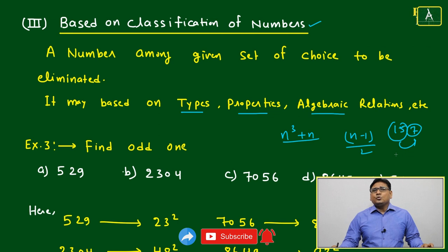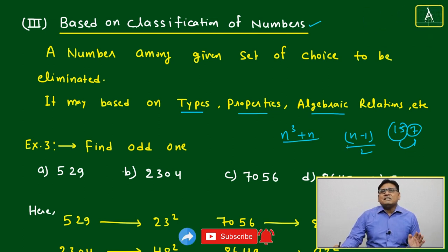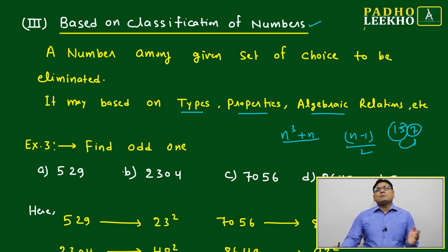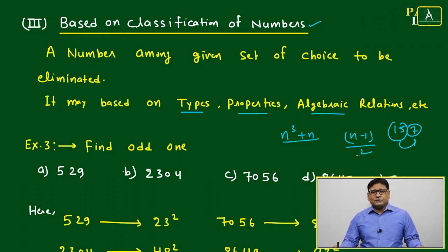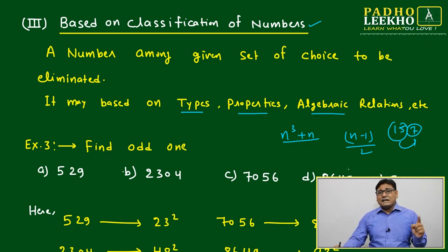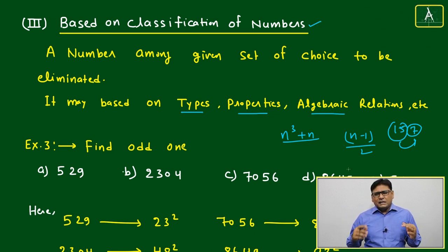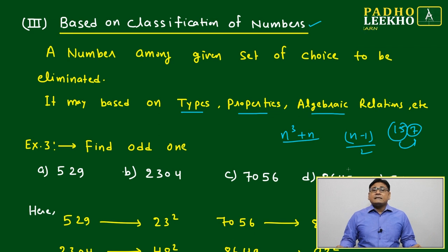Now just by seeing itself, 157, how much it is difficult to analyze or to arrive at this conclusion that 15 is related to 7 by n minus 1 by 2. This is the first problem here, this is the first kind of problem. Or you can say multiple types of relations can be established. Second thing...